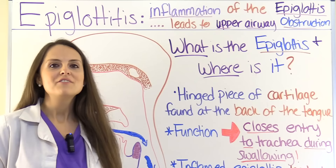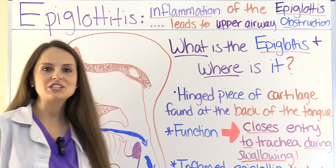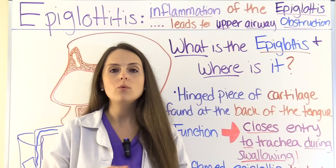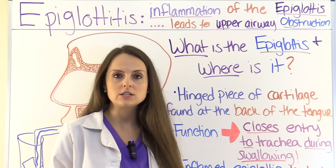First, let's start out talking about what is this condition. It is where there's inflammation of the epiglottis, and whenever this happens, it can lead to an upper airway obstruction, which is a medical emergency. Our pediatric patients tend to struggle with this condition more than adults, but adults can get epiglottitis.